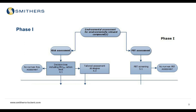Looking at the phase one part in detail, the decision tree has a limit based on two milligrams per liter. Sections 4.1 and 4.3 offer further clarifications in the new guidance regarding that aspect. If you want to read more about PBT screening, section 5.1 in the new guidance deals with PBT screening.